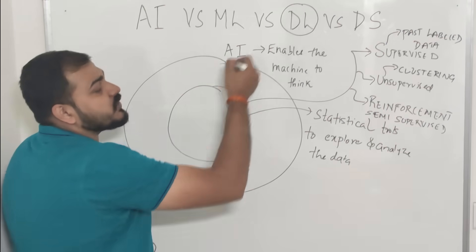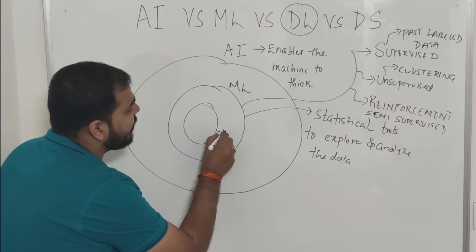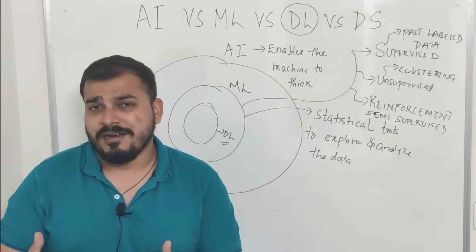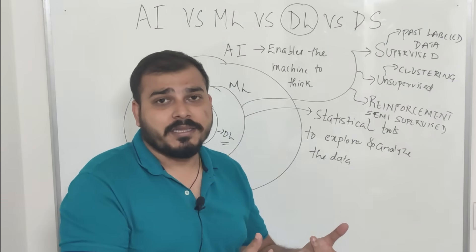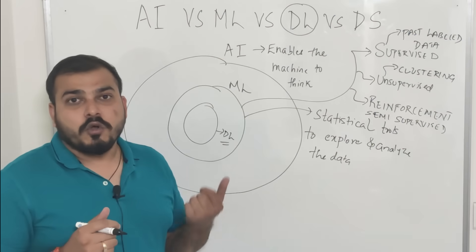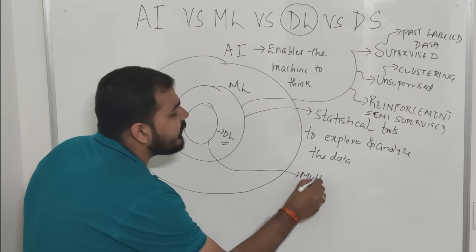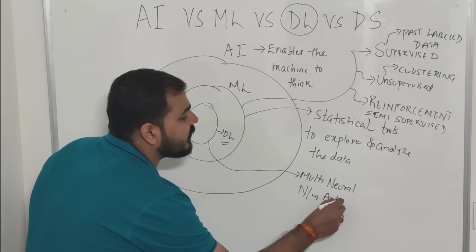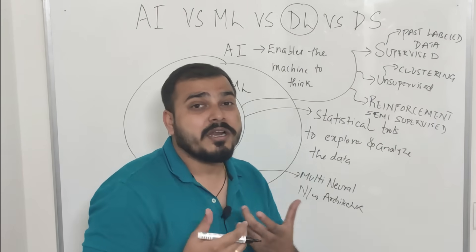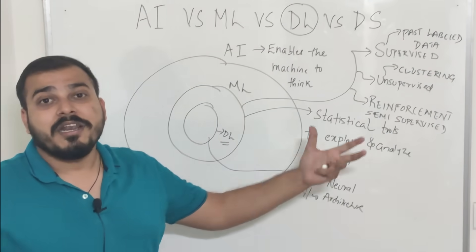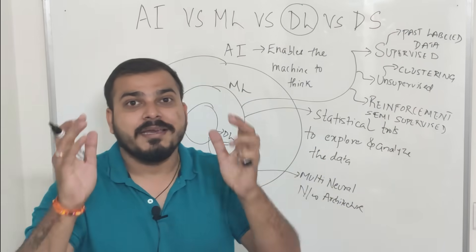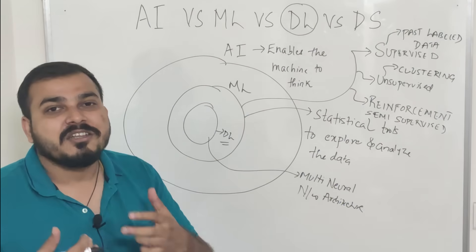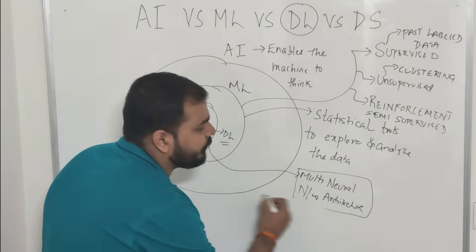Deep learning is again a subset of machine learning. Why was deep learning created? Scientists thought: can we make the machine learn like how the human brain actually learns things? That was the main idea behind deep learning. In deep learning, you create an architecture called a multi-neural network architecture. We are basically using multi-neural network architecture to create deep learning neural networks. The main idea is to mimic the human brain.